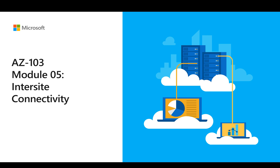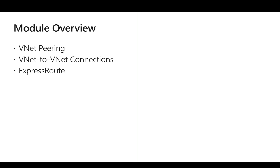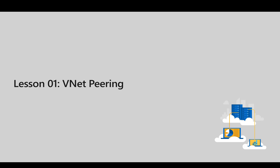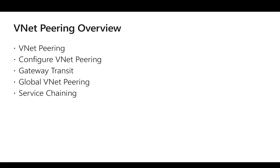Welcome back. We are going to look at Module 5, which covers inter-site connectivity. There are three lessons in this module: first is VNet peering, second is VNet-to-VNet connections, and third is ExpressRoute. In this video we are going to look at the first lesson called VNet peering, which covers topics like how to configure VNet peering, what is gateway transit, what is global VNet peering, and a concept called service chaining.